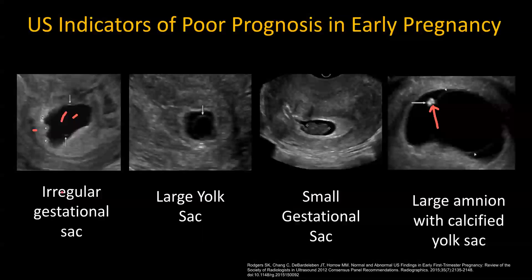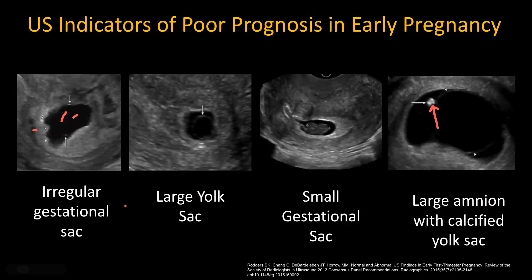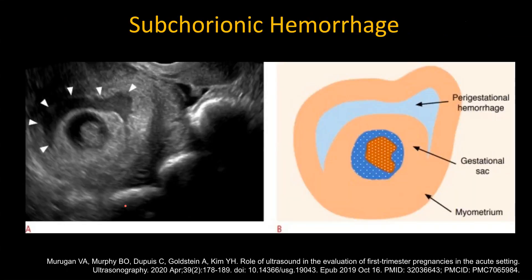In early pregnancy, the fetal heart rate is usually on the higher side — 150 to 160 — that's a good normal heart rate. Finally, a large subchorionic hemorrhage that covers more than two-thirds of the gestational sac would also suggest a poor prognosis.